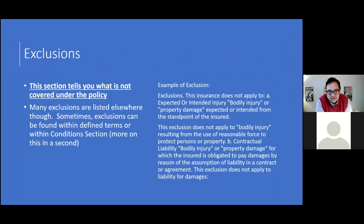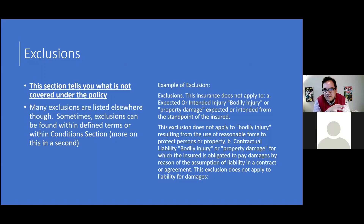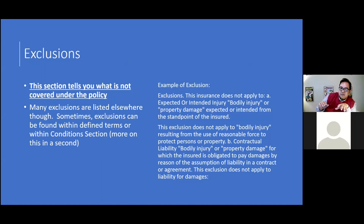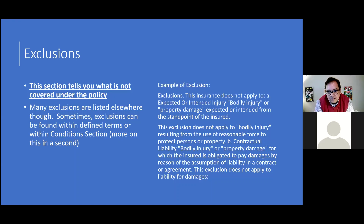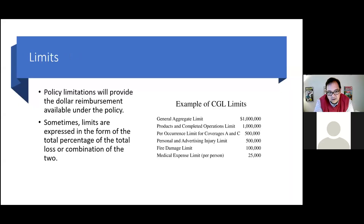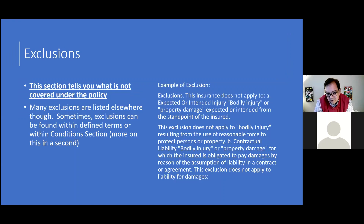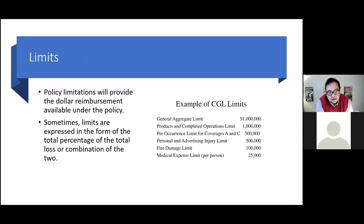Next is the exclusions section — the part carriers love — because this tells you what is not covered under the policy. Exclusions can even appear inside the definitions section, but there's also a dedicated exclusions section. For example, a CGL policy may state: 'This insurance does not apply to expected or intended injury or property damage expected or intended from the standpoint of the insured' — but then carve out an exception for reasonable force used in self-protection.